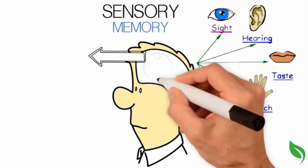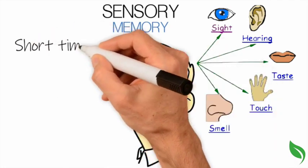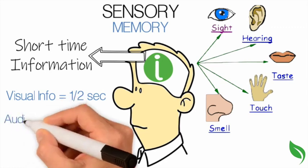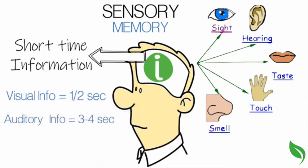Sensory memory can take a lot of information, but information is stored for only a very short time, with visual information being stored for less than half a second, and auditory information being stored for only three to four seconds.